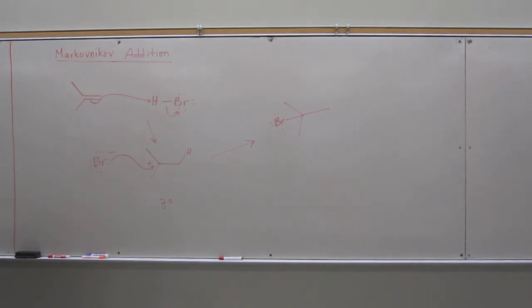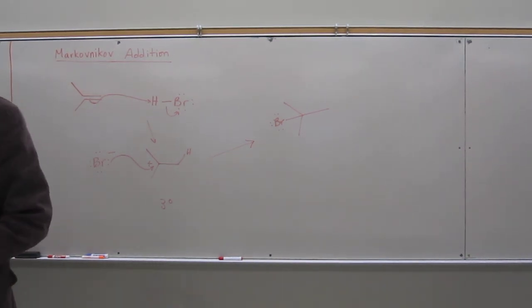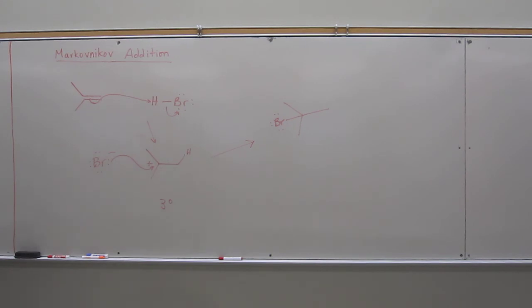So this is Markovnikov addition of HBr to an alkene. So we can do, also, anti-Markovnikov addition of HBr to an alkene. But we need an initiator. And why? Because it's a radical reaction.